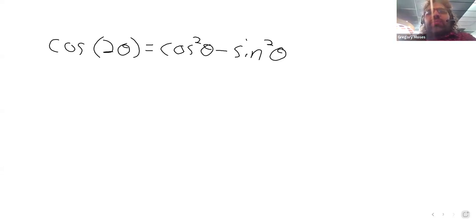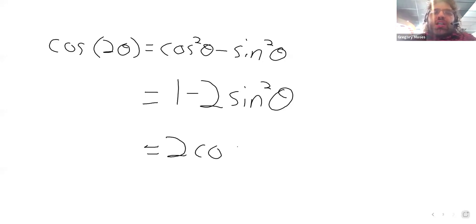Be careful not to mix this up with the Pythagorean identity, where we have the cosine squared plus the sine squared. But the cosine of two theta is also equal to one minus twice the sine squared of theta, and the cosine of two theta is also two times the cosine squared of theta minus one.